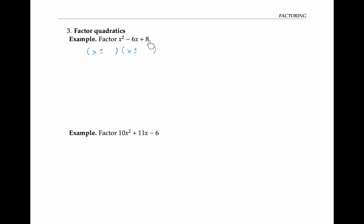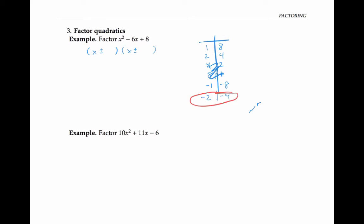So I look at all the pairs of numbers that multiply to give me eight: one and eight, two and four, and I shouldn't forget the negatives — negative one and negative eight, or negative two and negative four. Now I just have to find a pair that adds to negative six. It's not hard to see that negative two and negative four work. So I can write out my factoring as x minus two times x minus four. Checking by multiplying out gives x squared minus four x minus two x plus eight, which works out to just what I want.